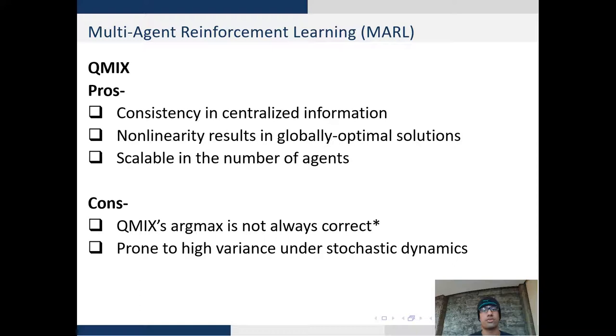Q-mix is definitely a state-of-the-art method in multi-agent reinforcement learning as it consistently provides centralized information. The non-linearity results in globally optimal solutions in most cases and the method is scalable in number of agents. However,